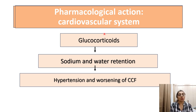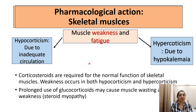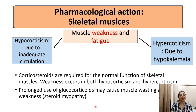Effect on the cardiovascular system: sodium and water retention causes hypertension and worsening of congestive cardiac failure. Effect on skeletal muscle: muscle weakness and fatigue can occur in both hypercorticism and hypocorticism. In hypocorticism, inadequate glucocorticoid causes weakness and fatigue. In hypercorticism, hypokalemia causes weakness and fatigue. Prolonged use of corticosteroids may cause muscle wasting and steroid myopathy.